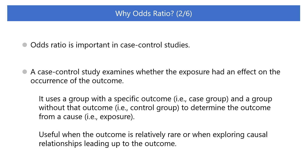The odds ratio is important in case-control studies. A case-control study is a study that uses a group of individuals with a specific outcome and a group of individuals without that outcome, to try to determine the current outcome from the past event or causes. This past event or cause is called exposure. In other words, a case-control study examines whether the exposure had an effect on the occurrence of the outcome. The study design is particularly useful when the outcome is relatively rare or when exploring causal relationships leading up to the outcome under study.